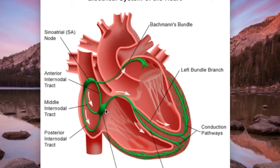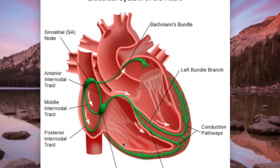This means that the atria and the ventricles depolarize separately. This phenomenon is called atrioventricular dissociation, meaning that any impulse coming from the atria is not conducted into the ventricles — rather, atria and ventricles are depolarizing independently.